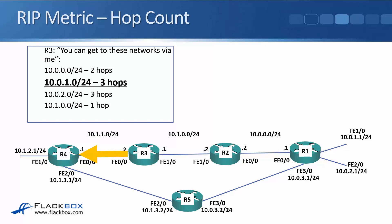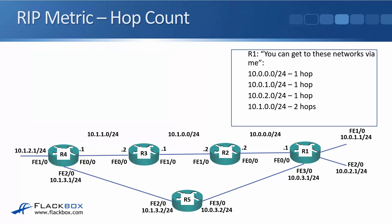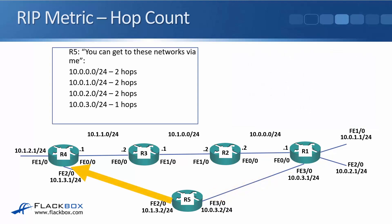R3 told R4 it can get to the 10.0.1.0/24 network through R3 and it will be three hops — that's along the top path. R1 is also directly connected to R5, and running RIP everywhere, so it forms an adjacency with R5 and sends updates telling R5 that 10.0.0.0/24, 10.0.1.0/24, and 10.0.2.0/24 are one hop away, and 10.1.0.0/24 is two hops. R5 updates its routing table and passes information on to R4, telling R4 those networks are two hops via R5, and 10.0.3.0/24 is one hop.